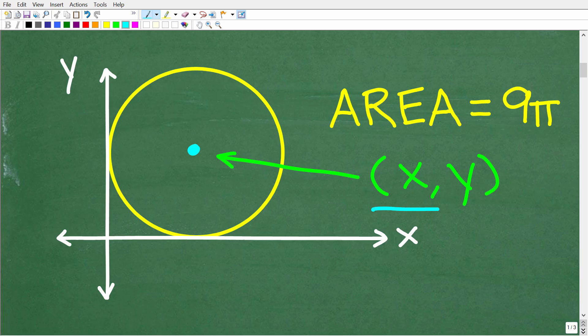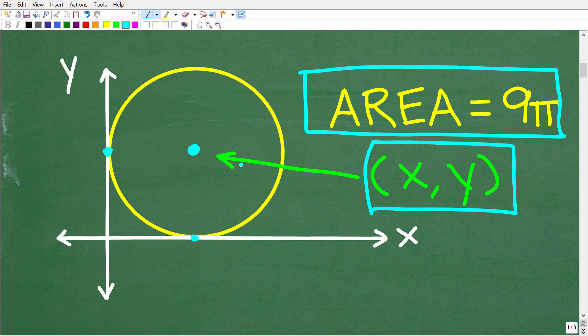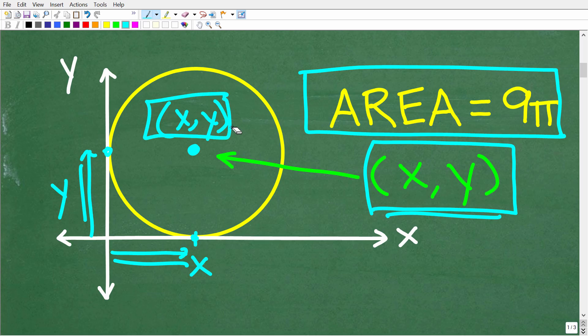Once again, we're looking for the center of this circle. What we know about this circle is that it's tangent to the x-axis and y-axis, and the area of the circle is 9π. So what does it mean to have an x-y ordered pair? Well, what it means is that we need to find this distance on the x-axis and this distance right here on the y-axis to find this point (x, y). This is the information that we really need in order to determine the center of the circle. So really what we need is this distance from the center out to the edge.